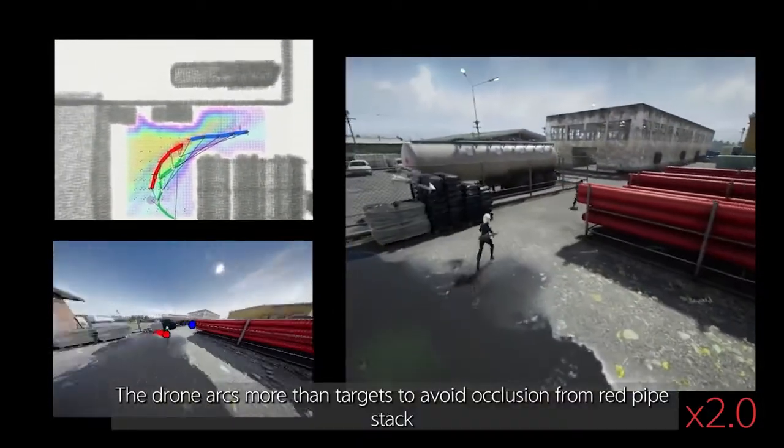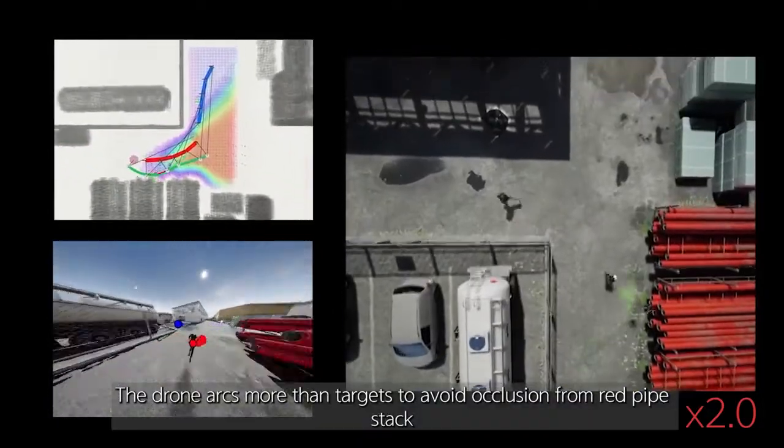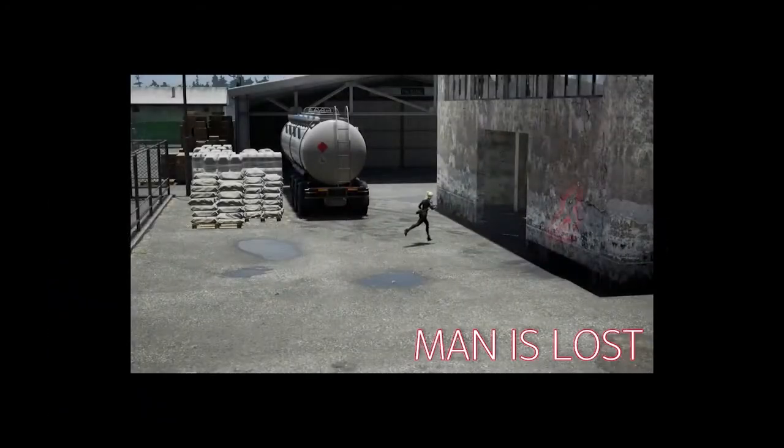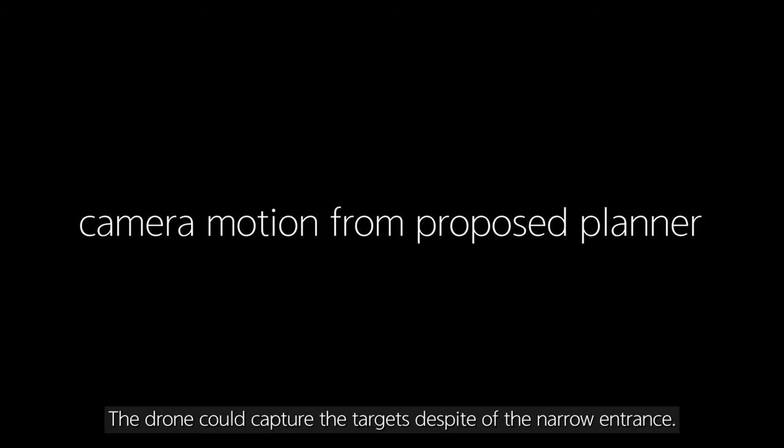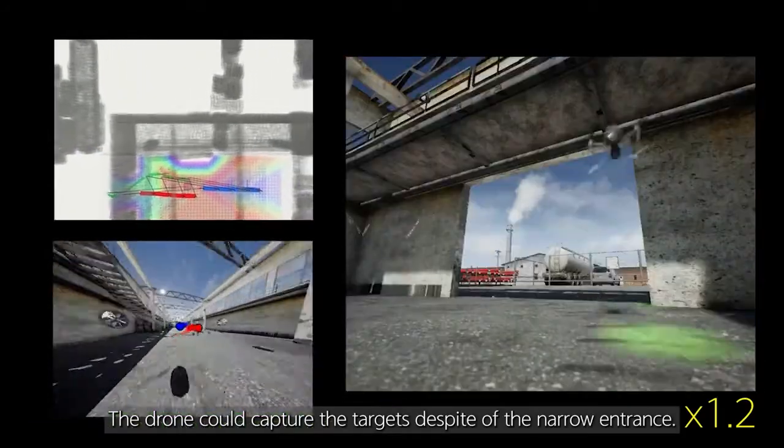The drone arcs more than targets to avoid occlusion from red pipe stack. The drone could capture the targets despite the narrow entrance.